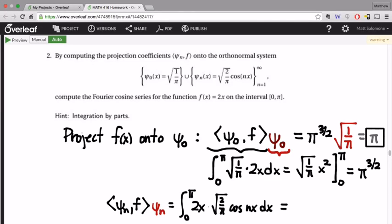So the projection of the function f of x equals 2x onto the basis function psi 0 of x equals radical 1 over pi. So the constant basis function in this Fourier cosine basis. The projection itself is the constant function pi.